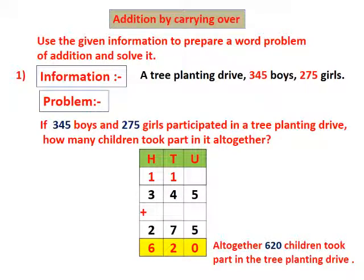Here we see the first example. Given information: a tree planting drive — 345 boys and 275 girls. इथे दिलेली माहिती आहे: वृक्ष दिन्डी, 325 मुले आणी 275 मुली. या दिलेल्या माहिती वरून आपल्याला आता उधारन तयार कराईचे आहे. इथे मी उधारन तयार केलेली आहे, त्या पन पाहोया.